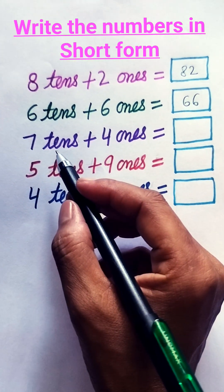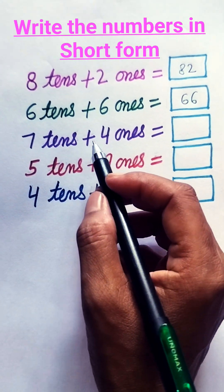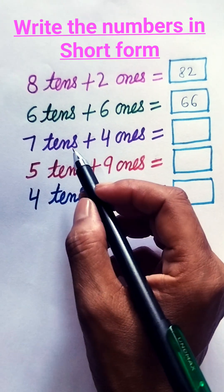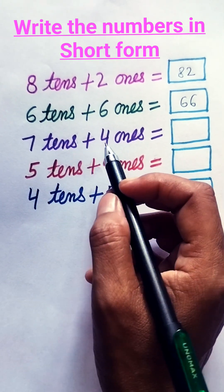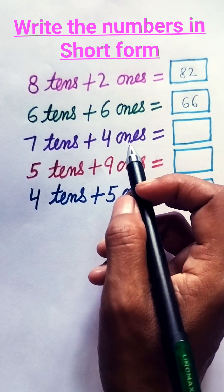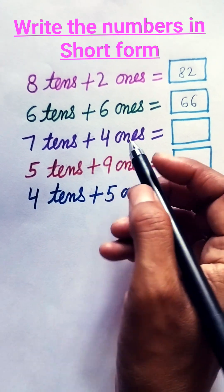Next, 7 tens plus 4 ones. 7 tens means 70, plus 4 ones means 4. 70 plus 4, 74.